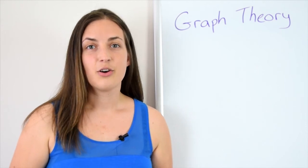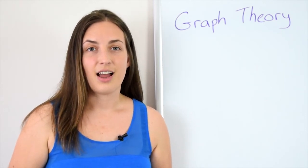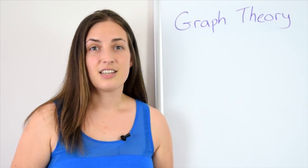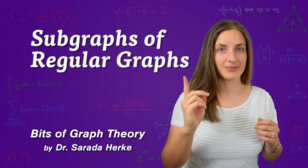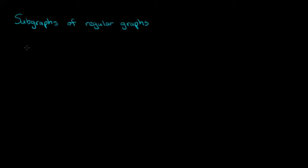In this video on graph theory, we're going to show that any graph of maximum degree r is an induced subgraph of an r-regular graph. We'll take a look at subgraphs of regular graphs. Remember that a regular graph is one in which all vertices have the same degree. The theorem we want to look at was proved by König in around the 1920s, and he's very well known because he's the first person to write a book on graph theory, done in about 1936.